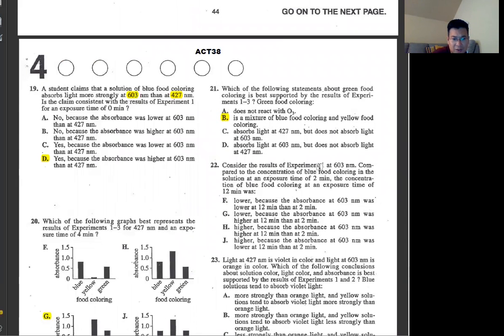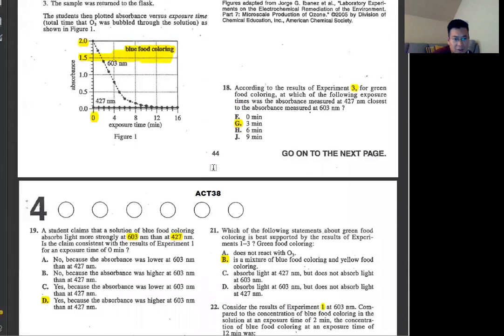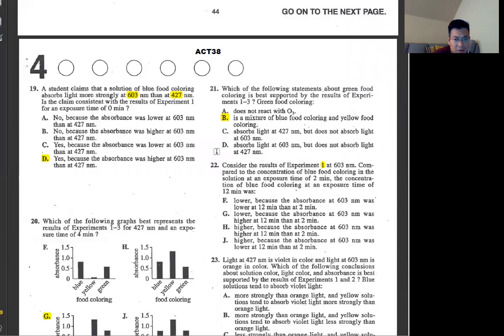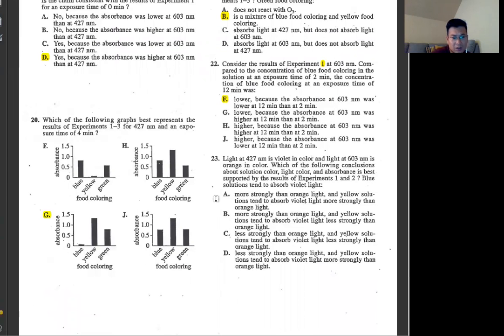Number 22, consider the results of experiment 1 at 603. Compare the concentration of blue coloring in the solution at exposure time 2 minutes to concentration at exposure time 12 minutes. At 603, 2 minutes is around 1.5, and 12 is almost nothing. So F, way lower.